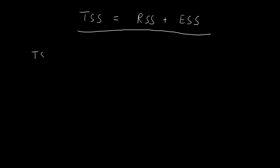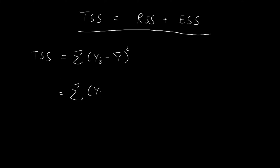So let's start with the left-hand side: the total sum of squares. By its definition, it's equal to the sum of (yᵢ minus the sample mean of y) squared. I'm going to drop the subscripts just to save some time. Now I can rearrange this term by subtracting a ŷᵢ and then adding back a ŷᵢ, then minus the sample mean of y, squared. Note that ŷᵢ equals β̂₀ plus β̂₁xᵢ — this is the point on the regression line with the same x-coordinate as the i-th data point.